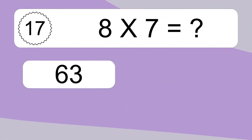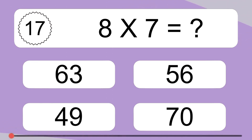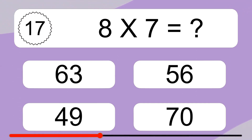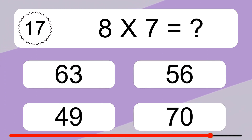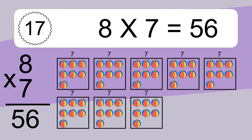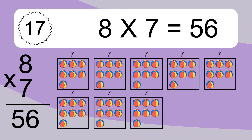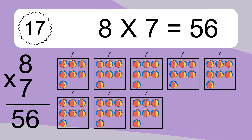8 times 7 equals what? 8 times 7 equals 56. We have 8 boxes and each box has 7 colorful balls inside. If you count all the balls in all the boxes together, you will have 8 times 7 balls. This equals 56 balls.